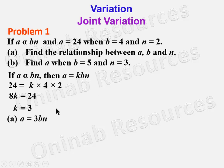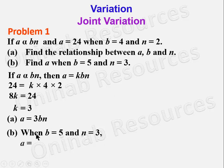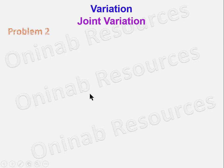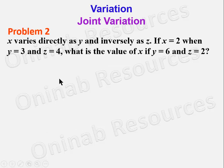For part (b), when b = 5 and n = 3, a = 3 × 5 × 3. That gives 3 × 3 = 9, times 5 = 45. So a = 45.